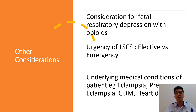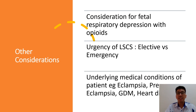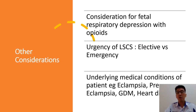Other considerations include fetal respiratory depression with the usage of opioids like fentanyl or morphine, which can cause fetal respiratory depression. We should consider the urgency of the lower segment cesarean section, whether it is elective or emergency, and the underlying medical condition of the mother, whether they have eclampsia, preeclampsia, gestational diabetes, or heart disease during pregnancy. All these factors should be taken into consideration during anesthesia for pregnant mothers.